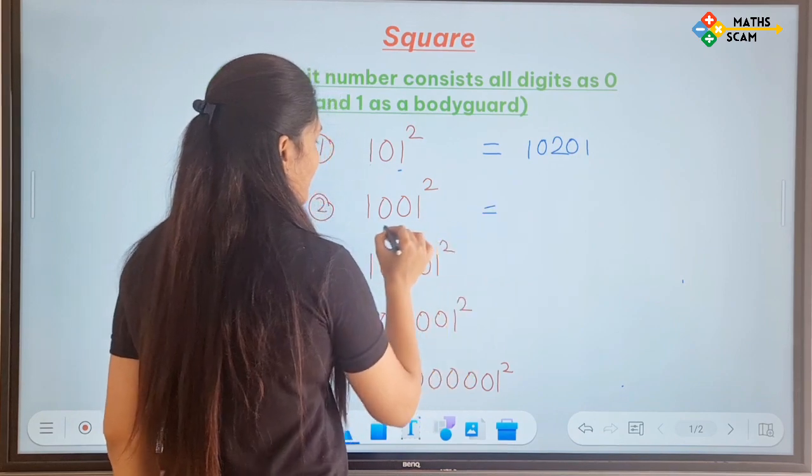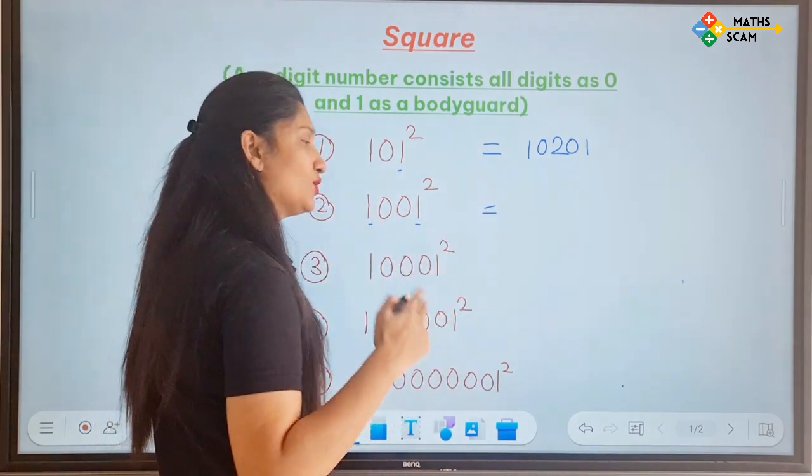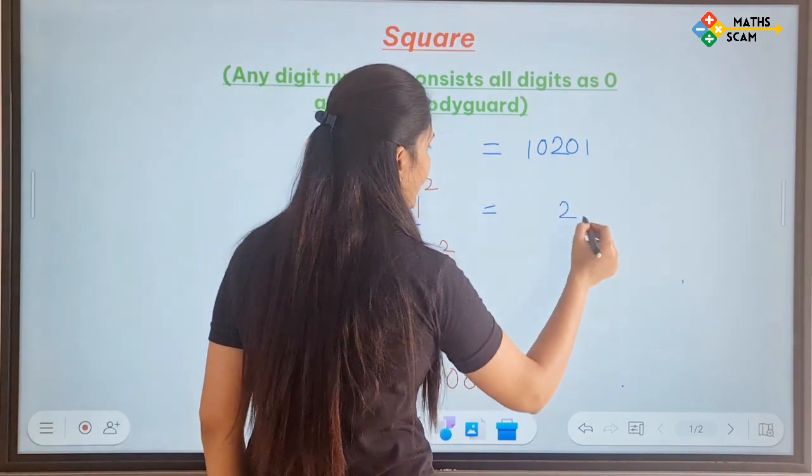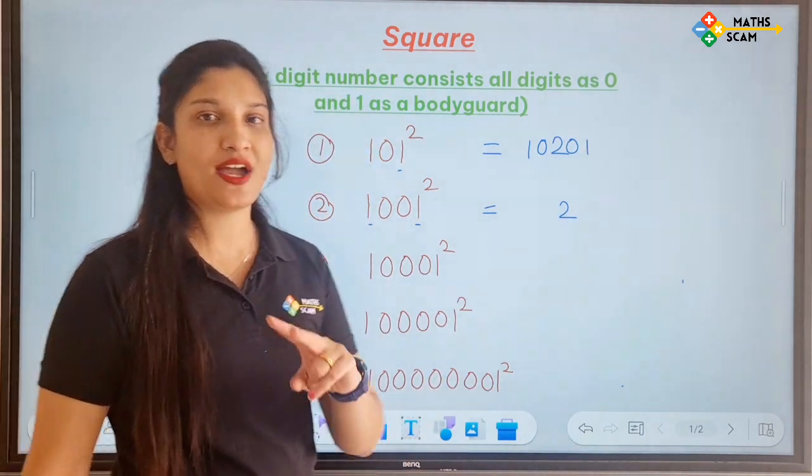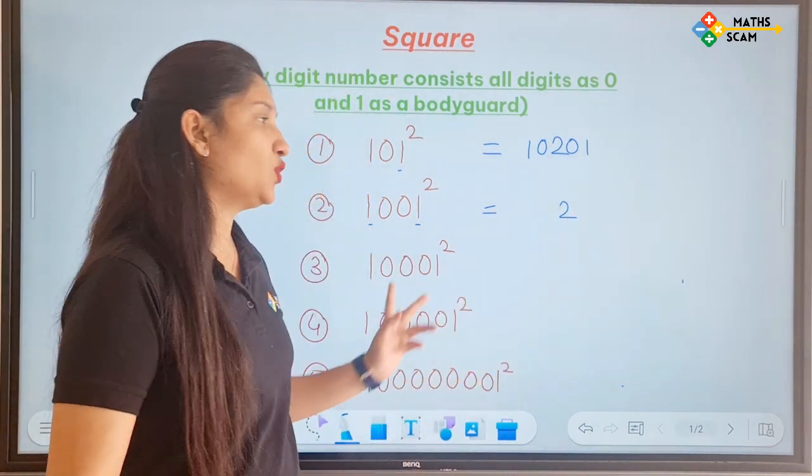Let's do the next question. How many 1's? 2 1's. So compulsory you have to write down 2 in between. You have to compulsory write down 2 because there are 2 1's.